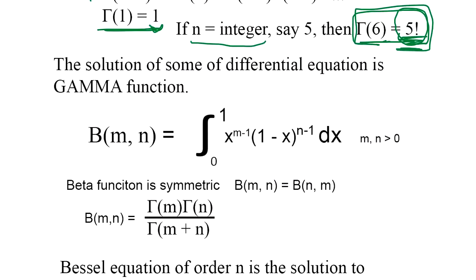The solution of some differential equations is a gamma function. We introduce another function called beta. Beta is like this: x to the m minus 1 times 1 minus x to the n minus 1, where m and n are both positive numbers. It doesn't have to be integer. This beta function is also used often to describe the solution of linear differential equations.